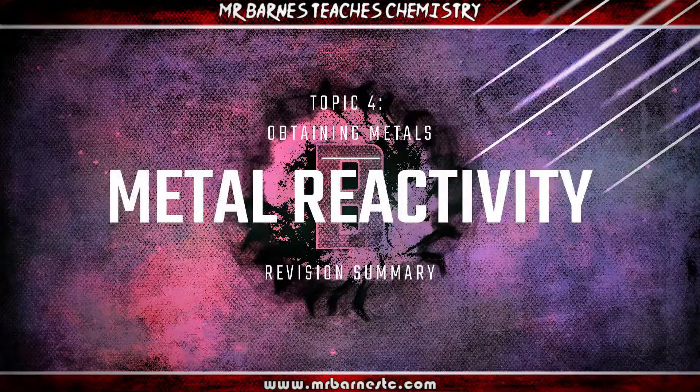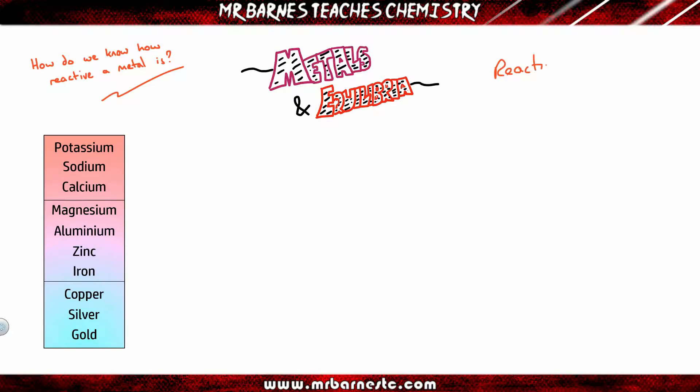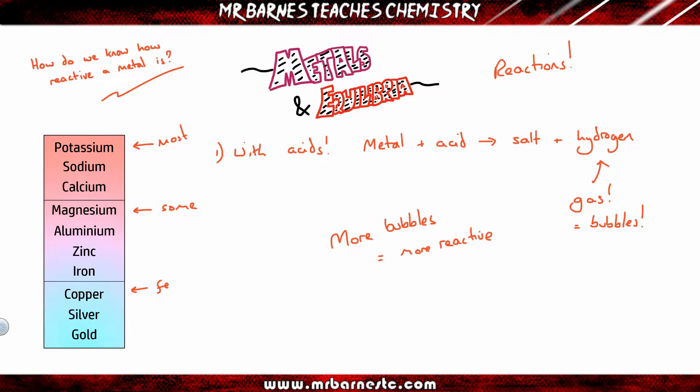The first part of the video is going to look at how we know how reactive a metal is. You look at their reactions, and there are three different types. The first one being reactions with acids. If you take any metal and react it with an acid, you'll get your salt and hydrogen gas. When hydrogen is given off, you'll see bubbles. The more bubbles you get, the more reactive a metal is. From my reactivity series on the left, you'd see the most bubbles with potassium, some with magnesium, and very few if any with copper. With unreactive ones like gold, you wouldn't see any bubbles at all.